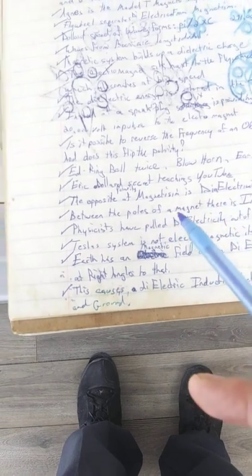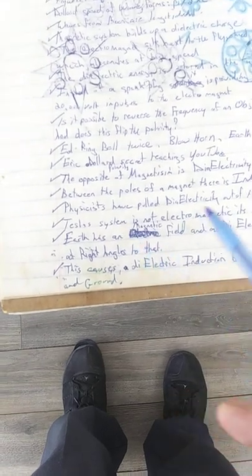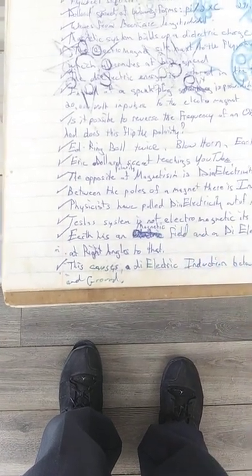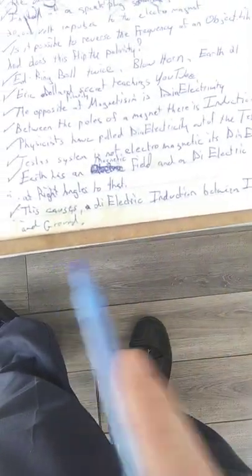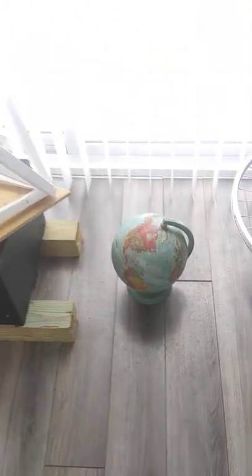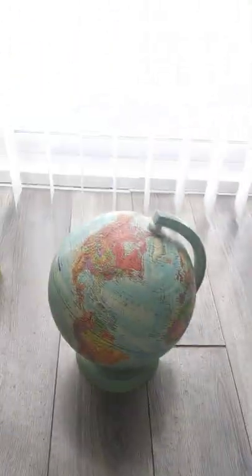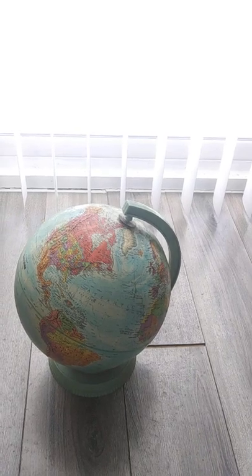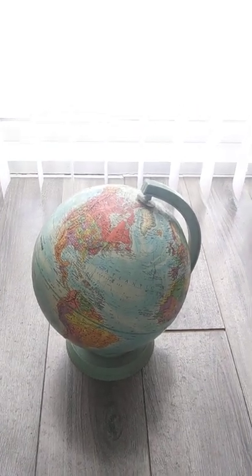He says the opposite polarity of magnetism is dielectricity. Between the poles of a magnet there's induction. The physicists have pulled dielectricity out of the textbooks. The Tesla system is not electromagnetic — it's dielectricity. The earth has a magnetic field and a dielectric field at a right angle to that. This causes dielectric induction between the ionosphere and the ground. This is how it's working — Ed's wheel is producing the magneto-dielectricity the same as the earth is producing its magneto-dielectricity.